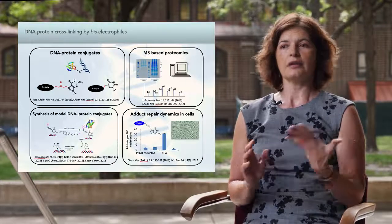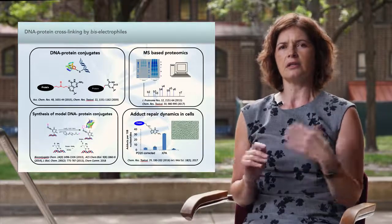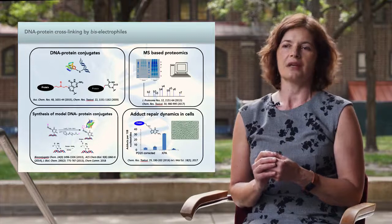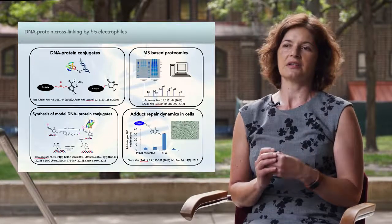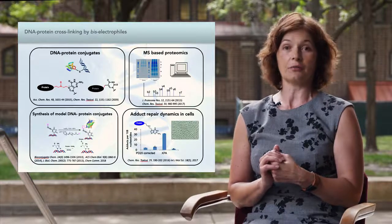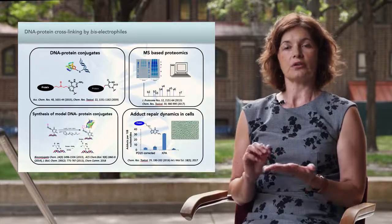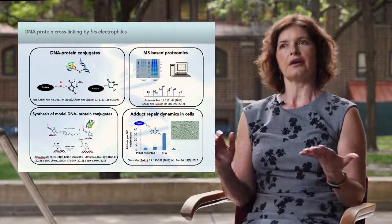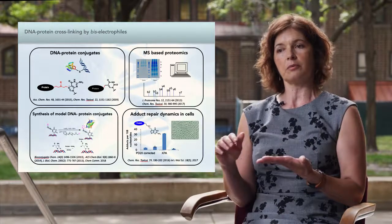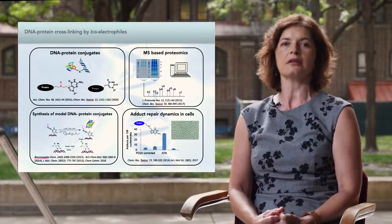We know that as we age, specifically in the heart and in the brain, there is an increase in the number of DNA-protein crosslinks. This project, a collaboration with Colin Campbell in pharmacology, aims to understand how these DNA-protein crosslinks form and how they are handled by cells, and how when the repair process fails it could lead to aging and other diseases.